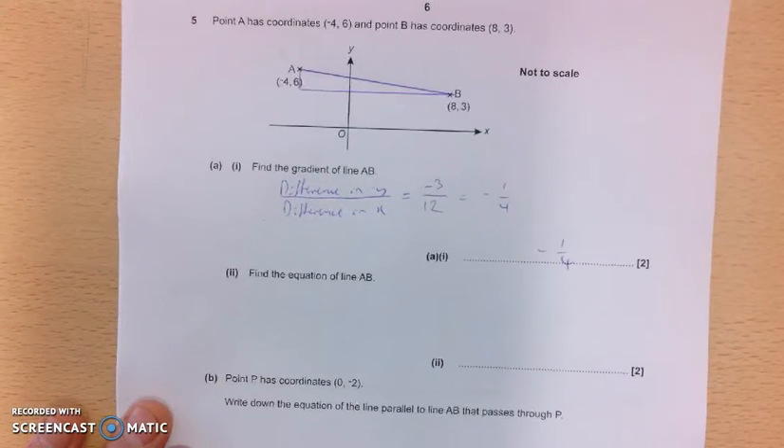OK, so now we're going to find the equation of the line AB. So equations of straight lines are always in the format y equals mx plus c. And in this case, we know the gradient already is minus 1 quarter, so we could fill in that y is minus 1 quarter x plus c. But we've got to work out the c. Now we've got two coordinates here we can use to help us. So I'm going to use the 8, 3 coordinate, just because it's all positives, and I think that will make our life a bit easier.